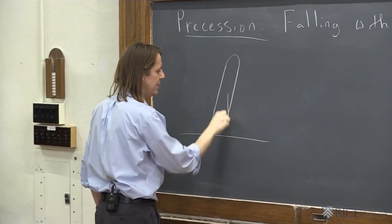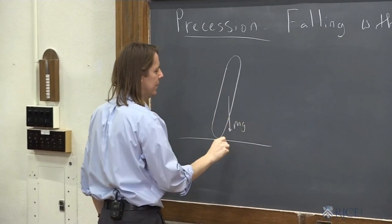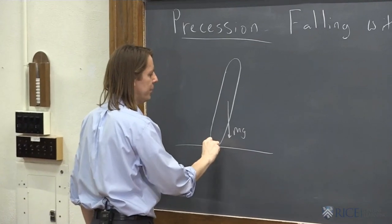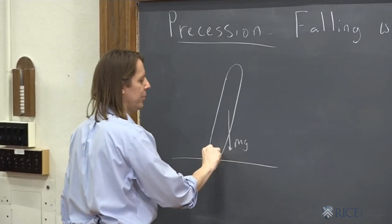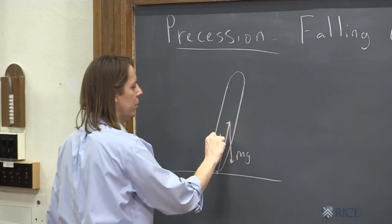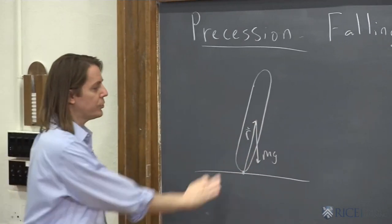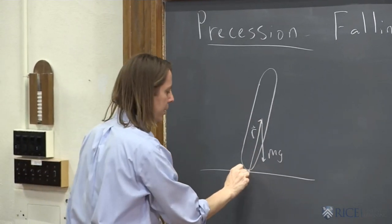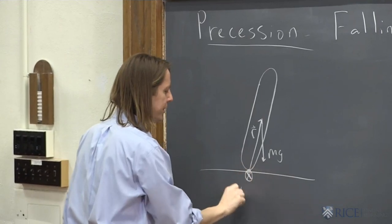There's mg pulling it down at its center of mass. This is your point of contact, so we're thinking about rotation around that point. So there's your r. So sure enough, you have a torque here due to the gravitational force.